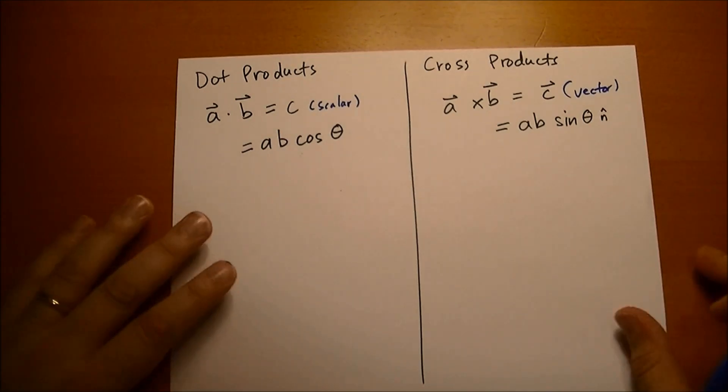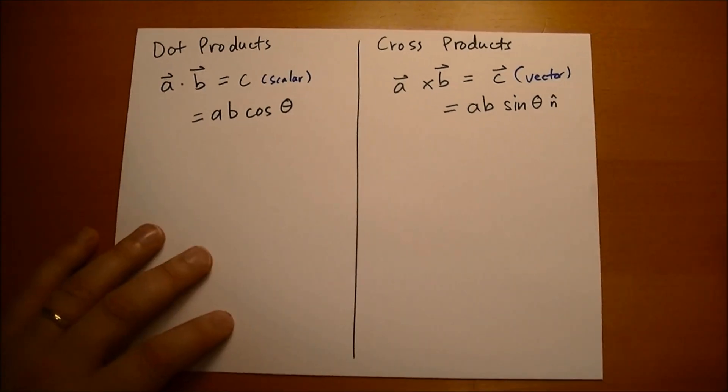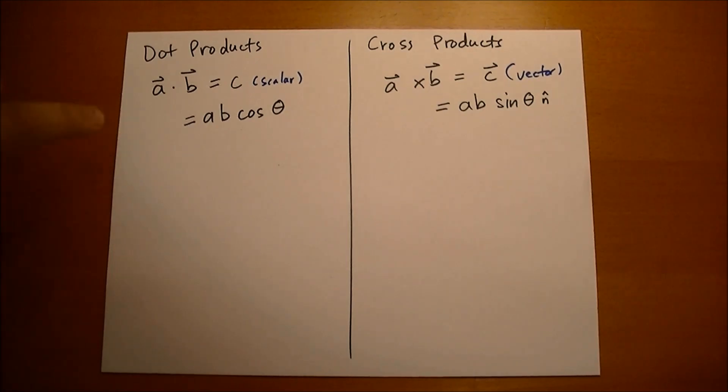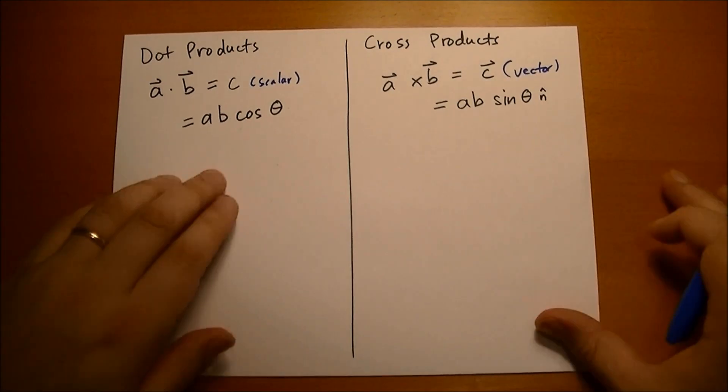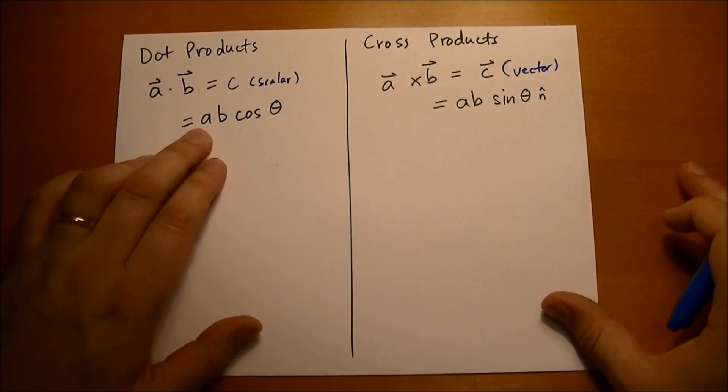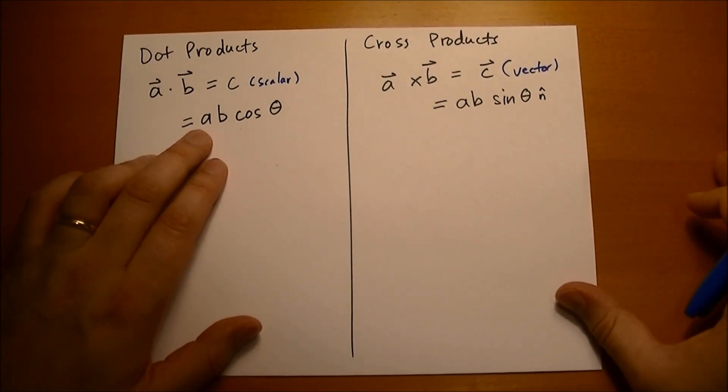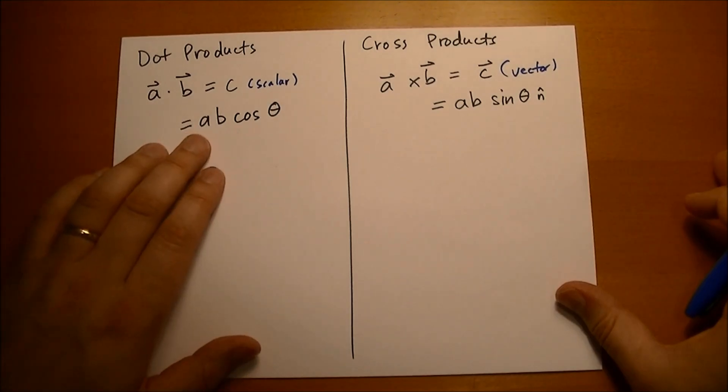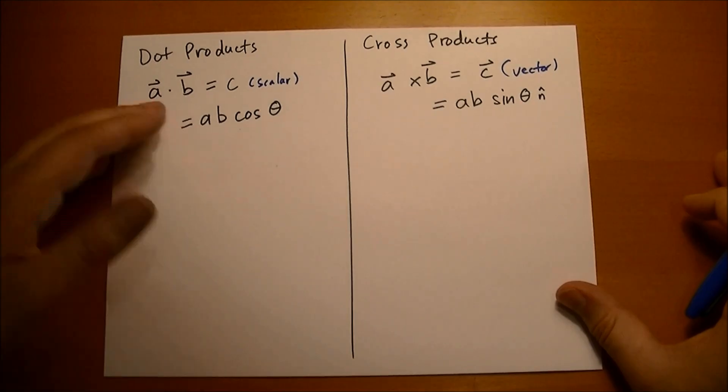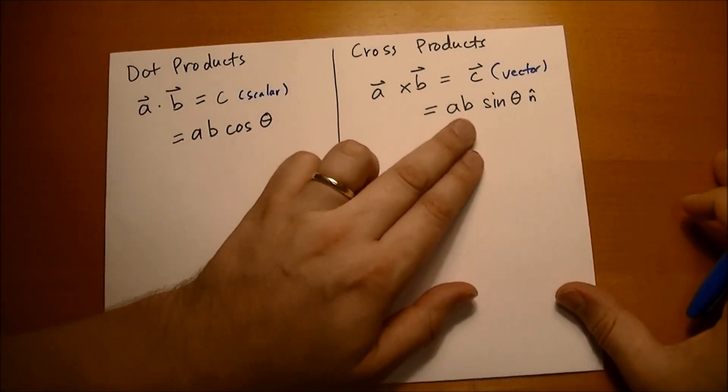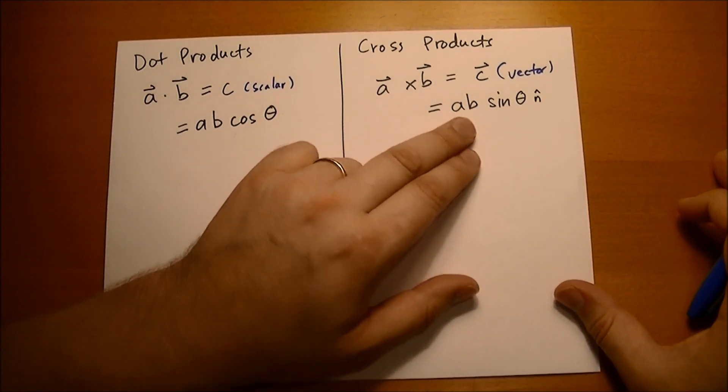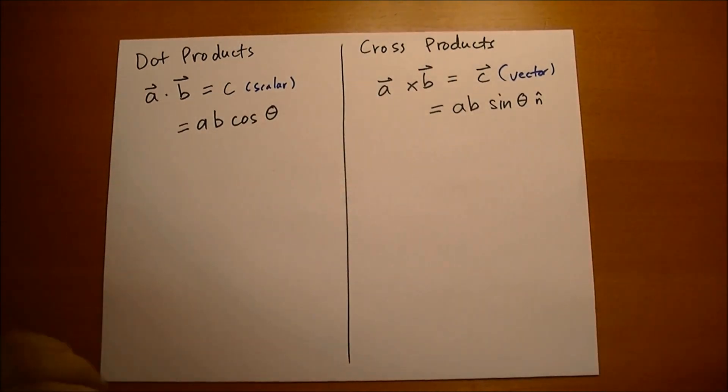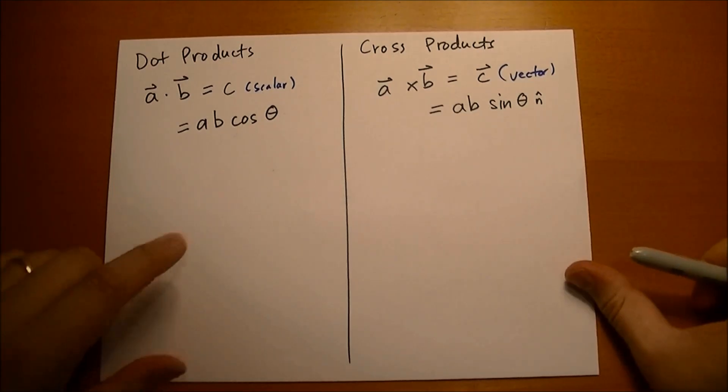So really briefly, you should get into this habit when you're doing physics. Whenever you see a formula like this, you should always think what it really means. If a doubles in size, then the dot product is going to double in size. If it quadruples, the dot product quadruples. If you halve it, the dot product is halved. And the same is true for the cross product. It's proportional.